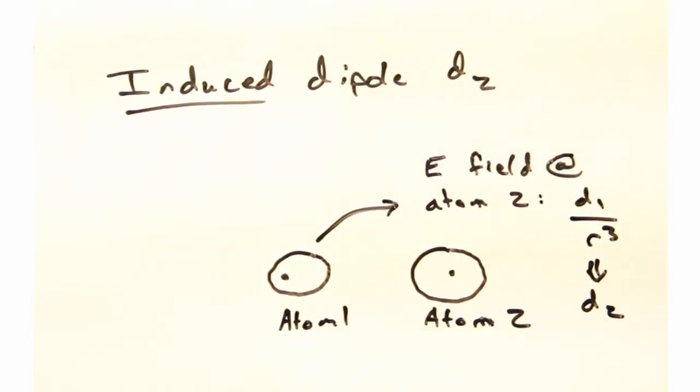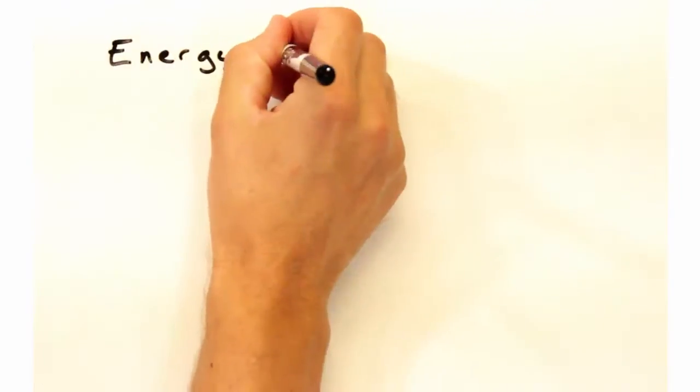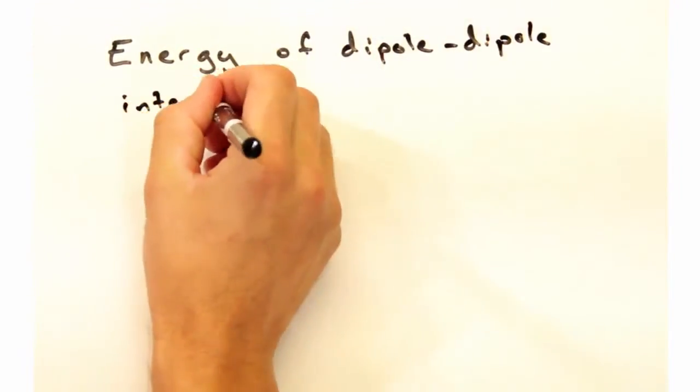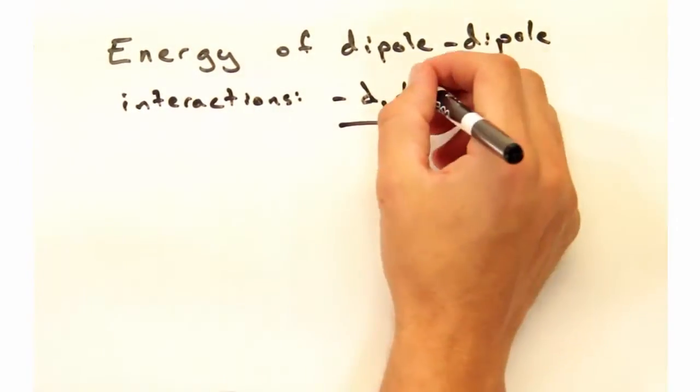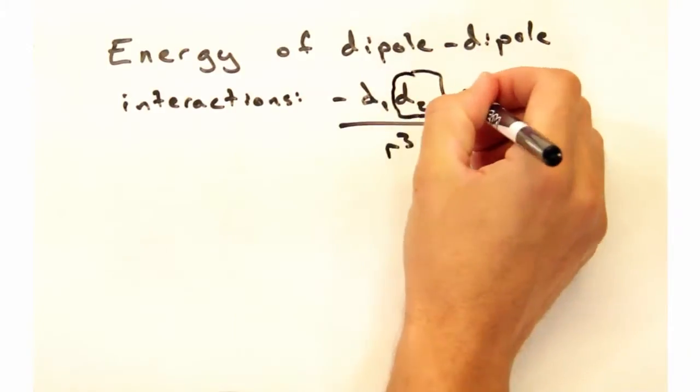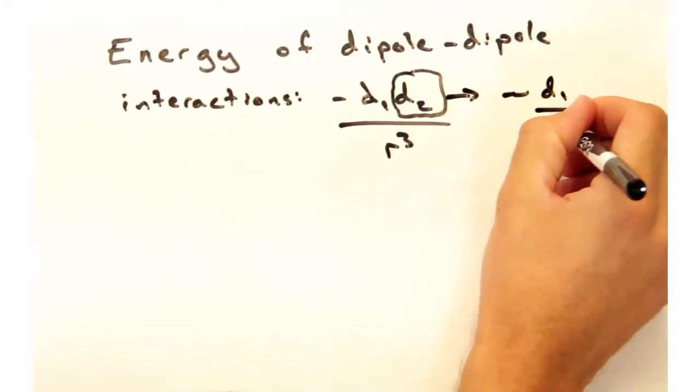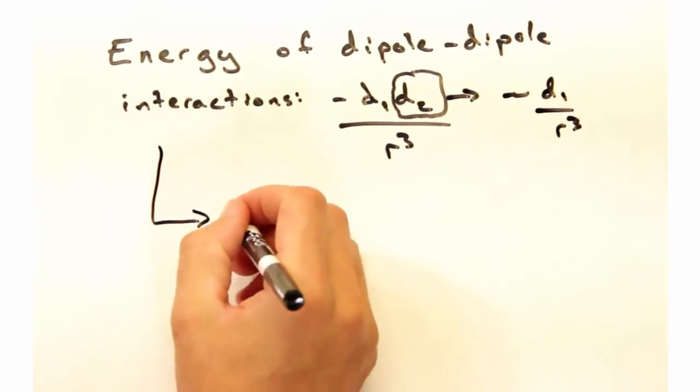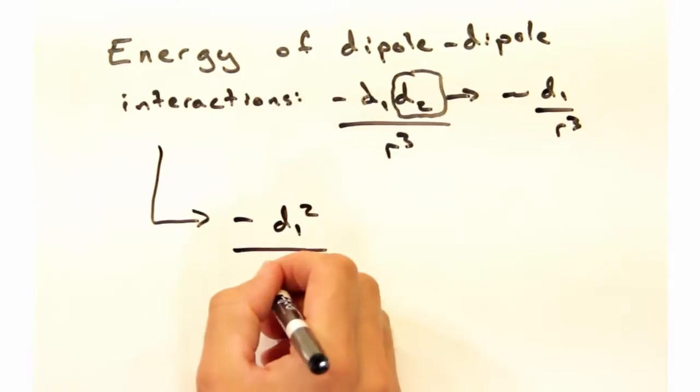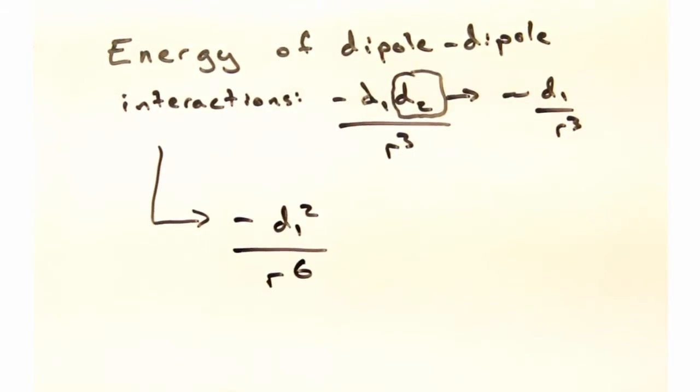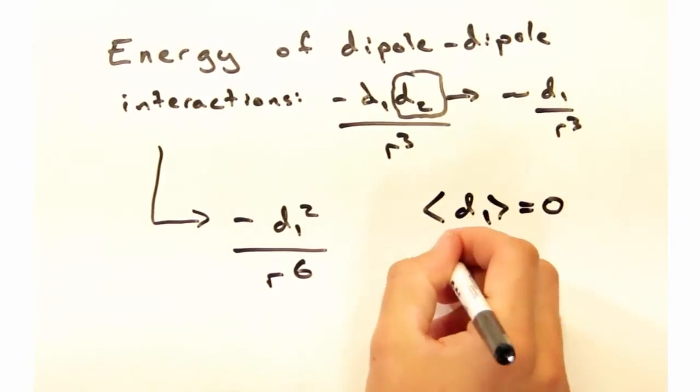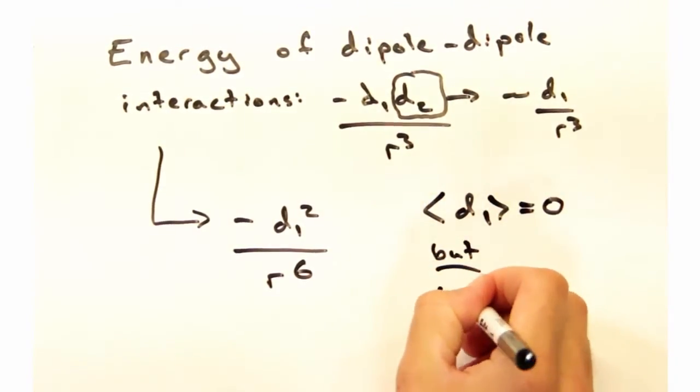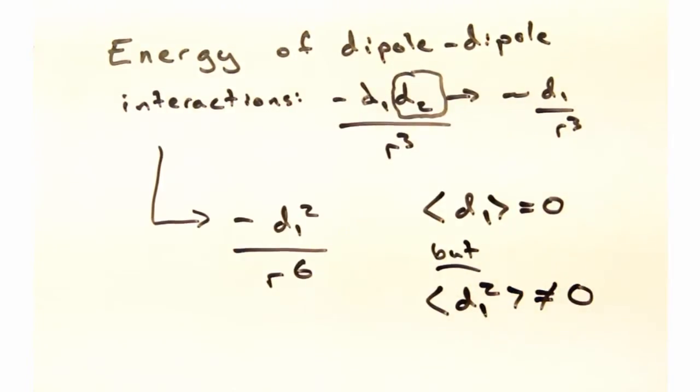Exactly, and we can describe the energy of this interaction as the product of the dipoles over the distance between them to the sixth power, which is derived in Griffiths' EM book on page 165. So taking the dipole induced at the second atom and plugging it back into here, we have an expression for the energy interaction in terms of the first spontaneously formed dipole squared. So earlier when we thought about the time averaged part of dipole one, we said it was zero.